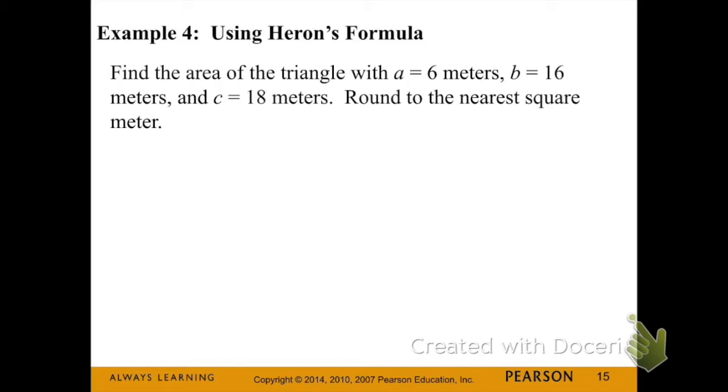Example four, using Heron's formula. Find the area of a triangle with sides 6, 16, and 18. Round to the nearest square meter. I want you to pause your video and try this one on your own. So start by finding s and then plugging in what you know into Heron's formula and getting out the area.